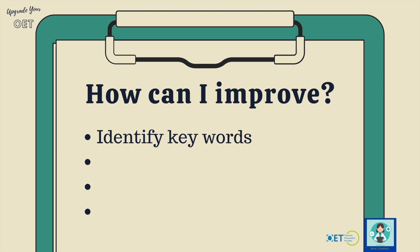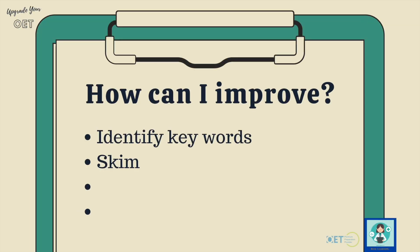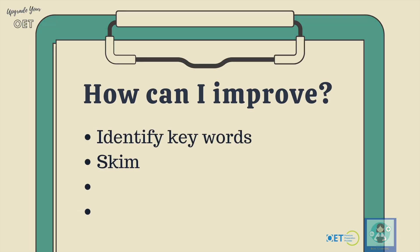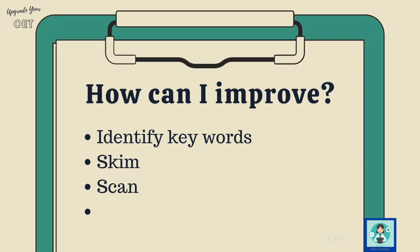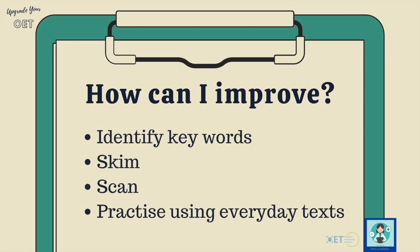You have to identify the keywords in the questions. You've got to skim the text to get the general meaning so you know what it's all about. Then you've got to scan for the keywords or their paraphrases. And of course, to get better, you need to practice using everyday text. Don't do this just with the test papers, but practice skimming, scanning, and identifying keywords with any text that you see.